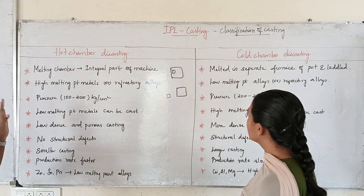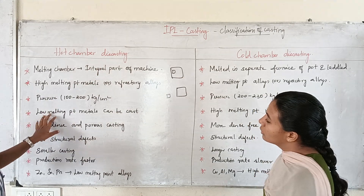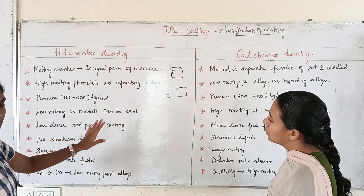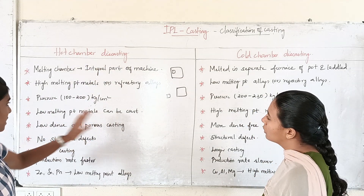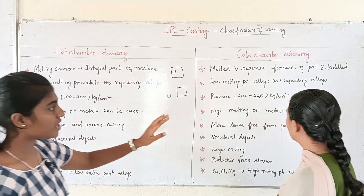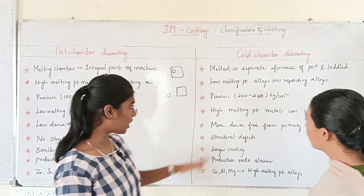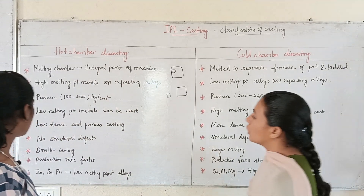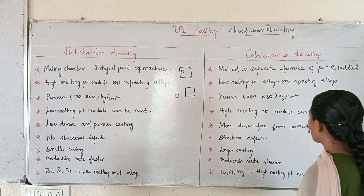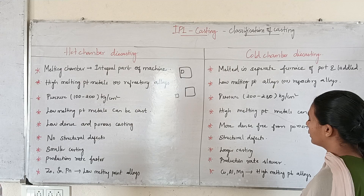Hot chamber casting processes only low melting point metals. Cold chamber casting processes high melting point metals.